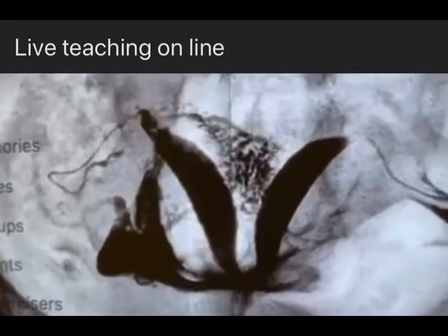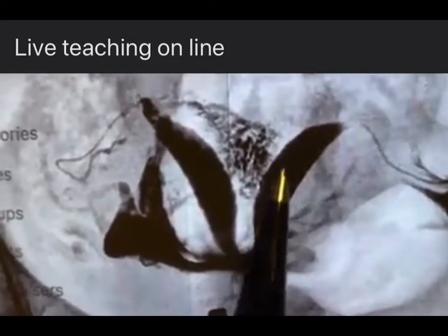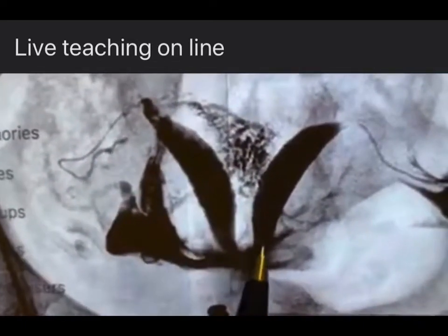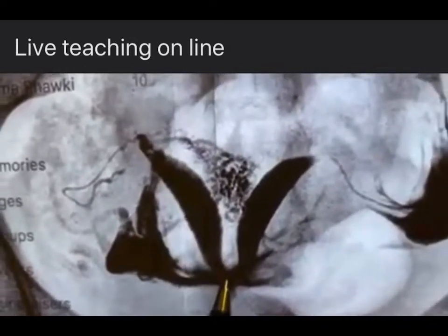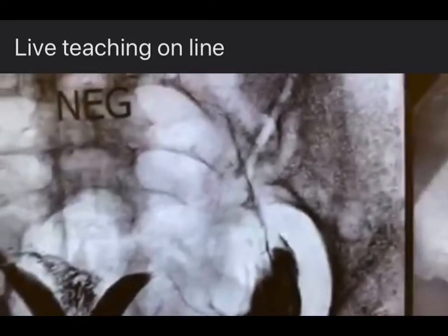Here is another view. That's one cornua, the other cornua, and the angle between them. So this is a uterine septum. It's very long, reaching the level of the internal os.